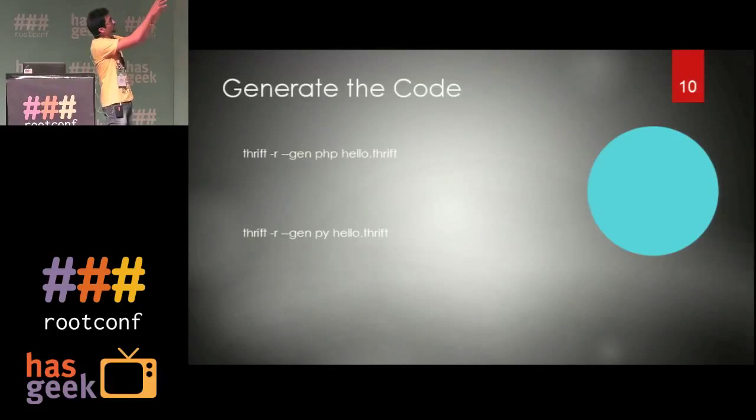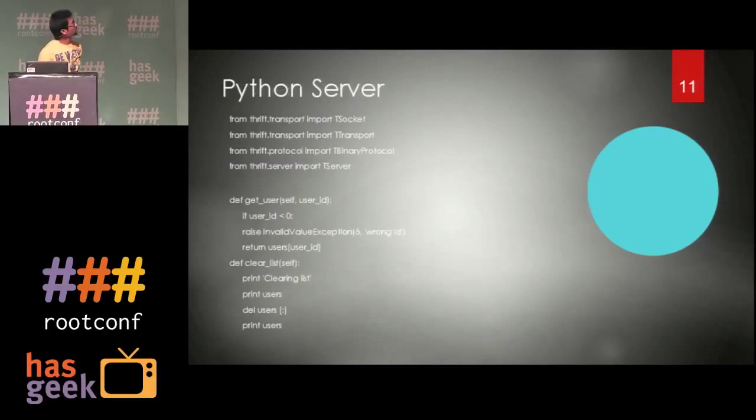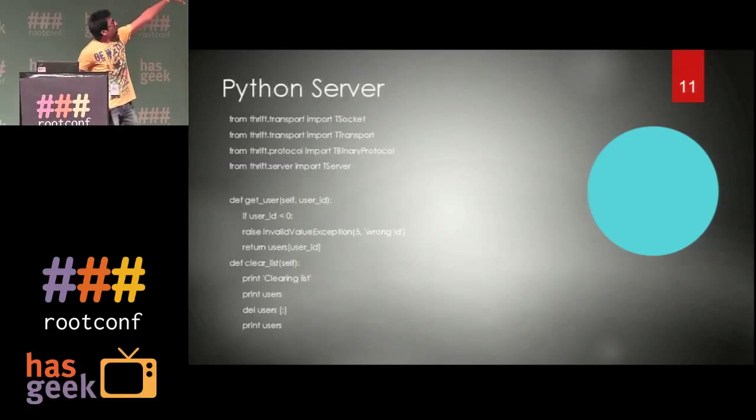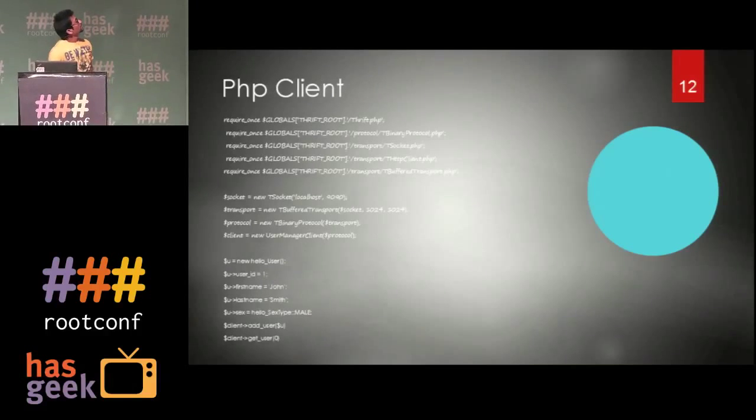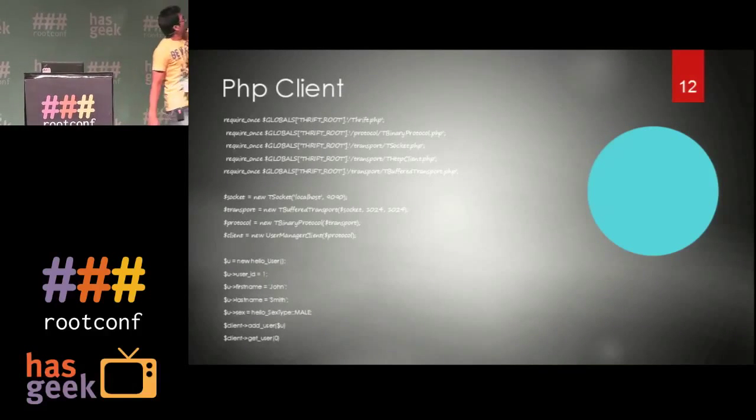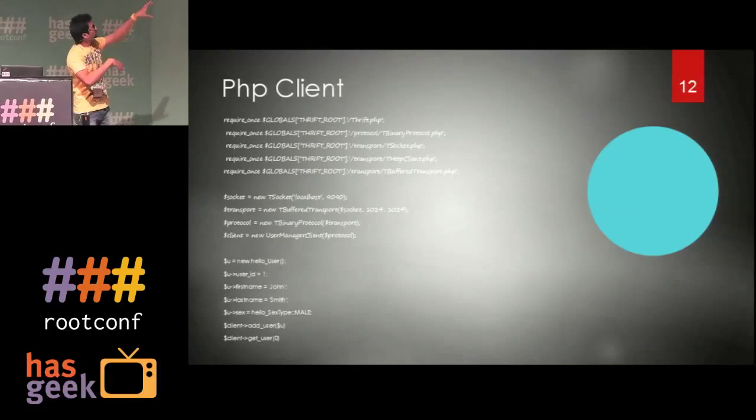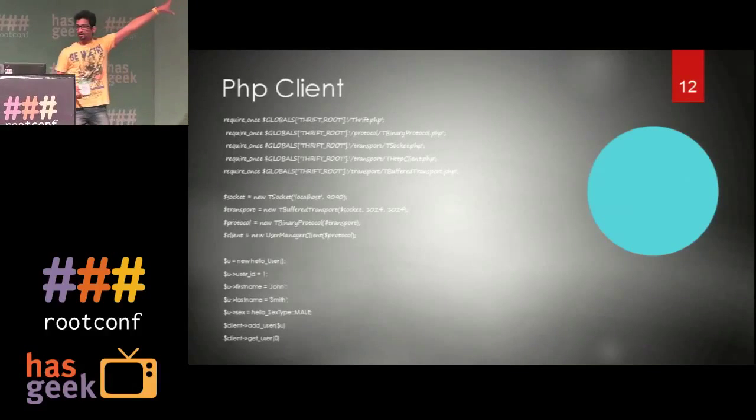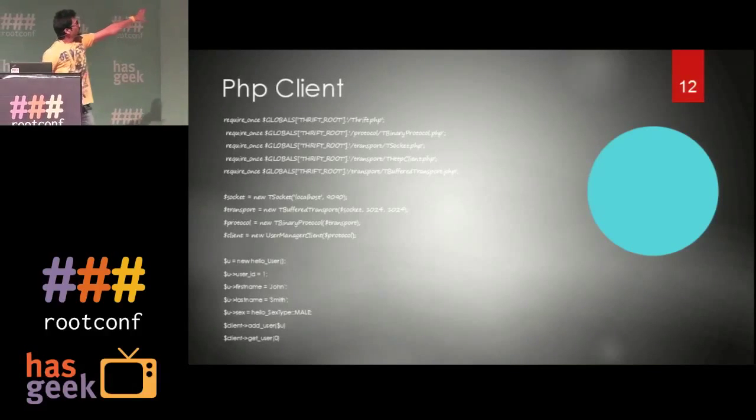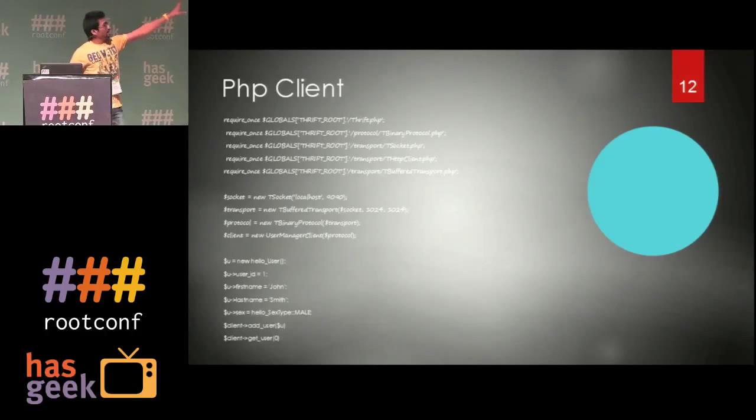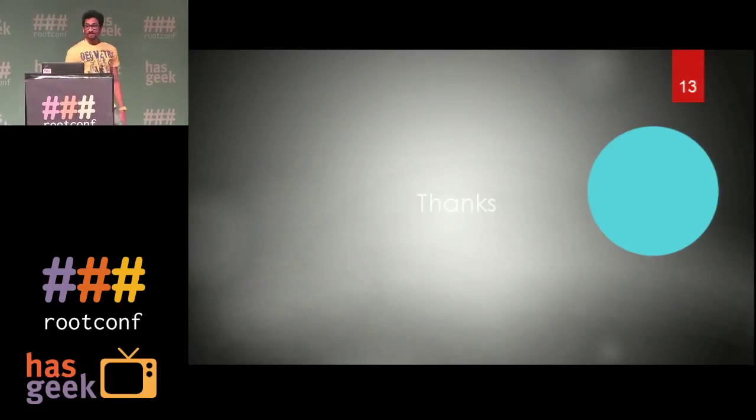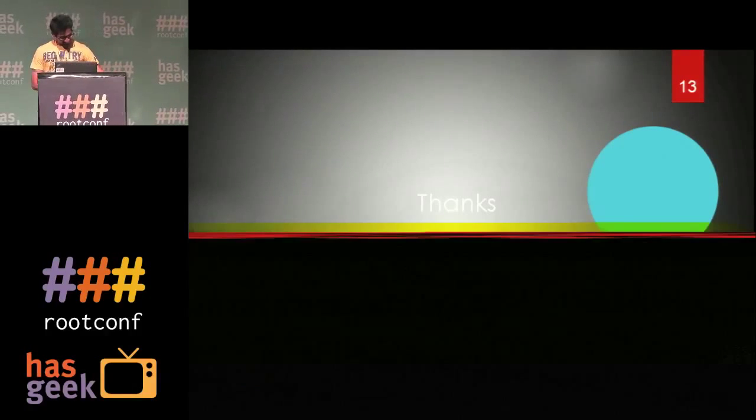You generate code for PHP and Python. You write the Python code calling the protocols and the definitions, then you call the PHP client including your particular libraries. This is a socket which the Python server runs, and these are the functions. You take it, roll it, and send the parameters back to the PHP client. I'm just sending the params to Python and getting back to PHP. That's it, thanks.